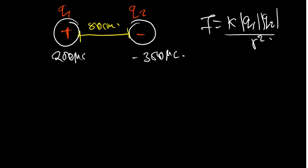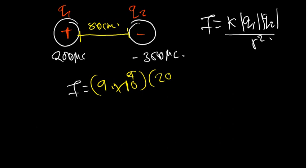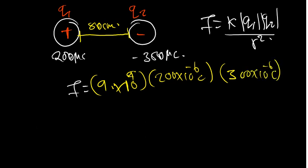Let's plug in the values. The electric force is given by: k = 9 × 10⁹, then Q1 = 200 × 10⁻⁶ Coulombs. Since we want the magnitude of the electric force, we ignore the negative sign on Q2, so Q2 = 300 × 10⁻⁶ Coulombs. Everything is divided by R² — converting 80 centimetres to metres gives 0.8, so we have 0.8 squared.